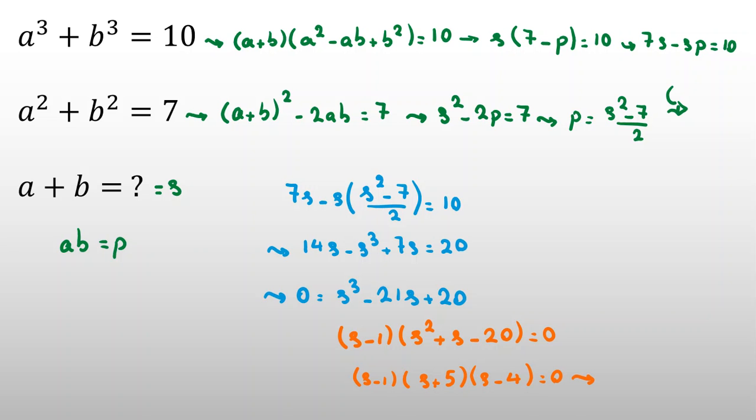s represents the sum a + b, and the possible values are 1, -5, and 4. We found three values for s.